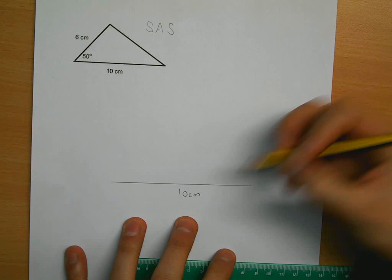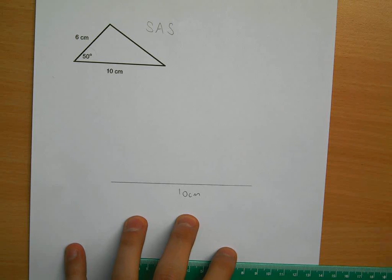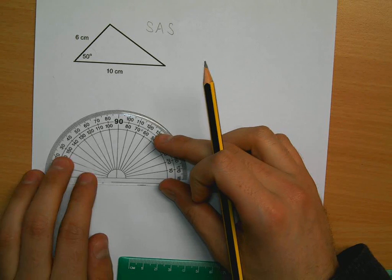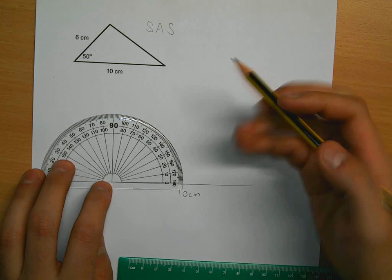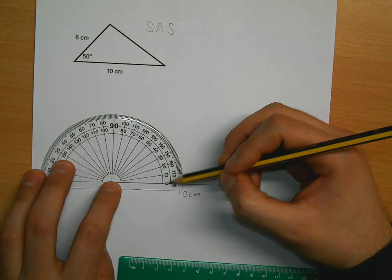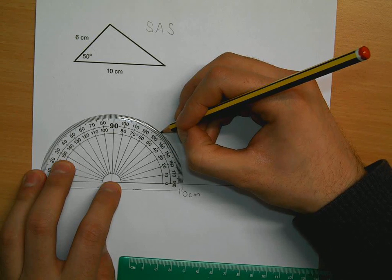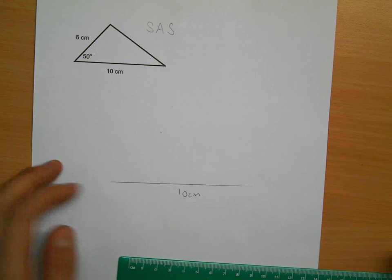Next, I need to draw this angle here, 50 degrees. Measuring from the left side, trying to be as accurate as possible: 0, 10, 20, 30, 40, 50. That is where 50 degrees is.